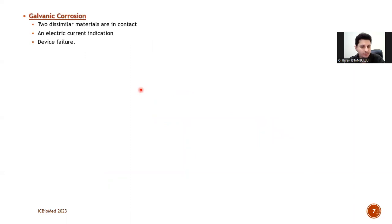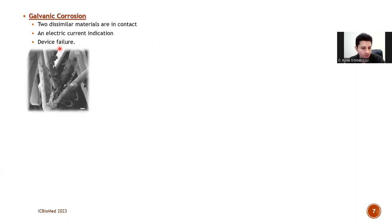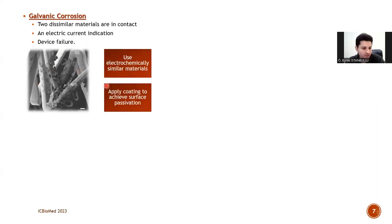One of the most common biomaterial corrosion mechanisms in the human body is galvanic corrosion. Galvanic corrosion occurs when two dissimilar materials are in contact with each other. In this case, while one of the materials acts like an anode, the other presents a cathodic feature. This may lead to material and device failure due to corrosion, as shown in this picture. Using electrochemically similar materials or applying surface coating can inhibit or completely block this corrosion process.